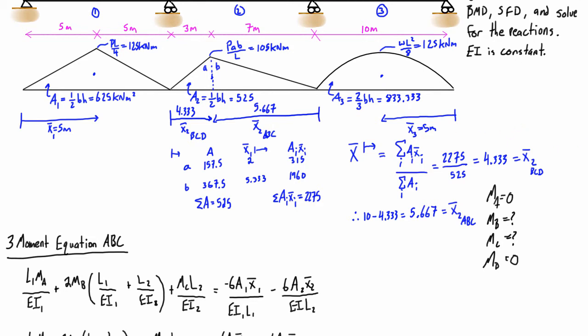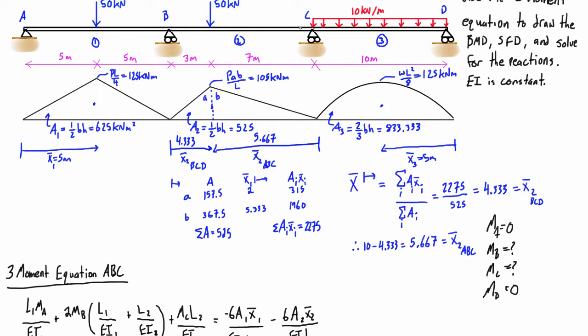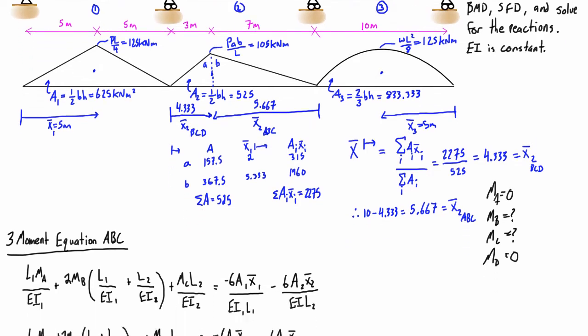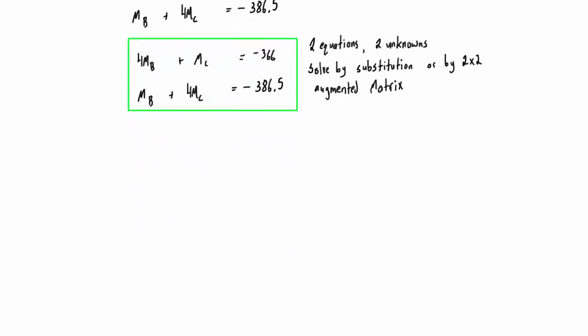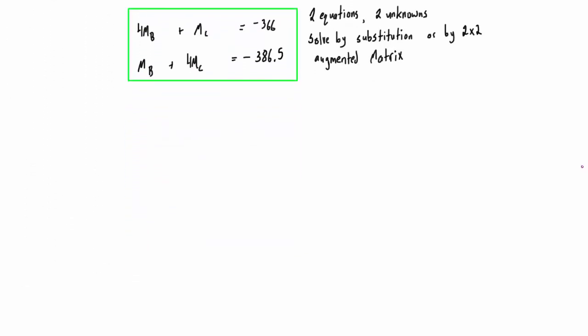Then we applied the 3-moment equation twice across span A, B, C, and then the second time was across B, C, D. That basically led us to here where we found this expression where we have two unknowns, two equations and two unknowns.